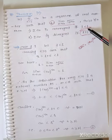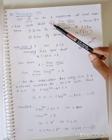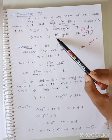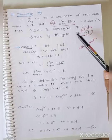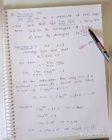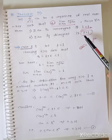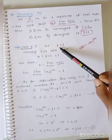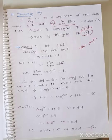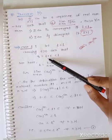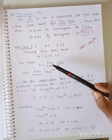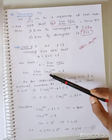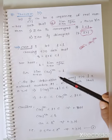Proof, Case 1: if L is less than 1. Choosing epsilon greater than 0 such that R equals L plus epsilon, which is less than 1. We have L equals the limit as n tends to infinity of the nth root of a_n, that is the limit as n tends to infinity of a_n to the power 1 by n equals L.